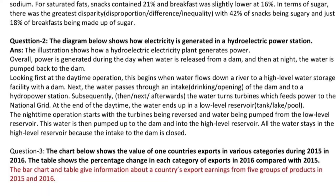The nighttime operation starts with the turbines being reversed and water being pumped from the low-level reservoir. This water is then pumped up to the dam and into the high-level reservoir. All the water stays in the high-level reservoir because the intake to the dam is closed.